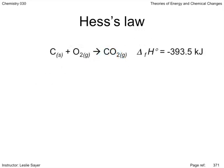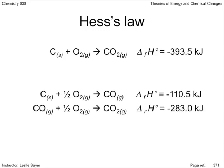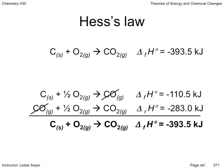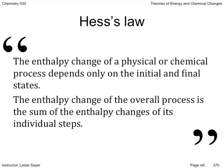So, whether you're using one process or a number of processes, the net change in enthalpy is dependent on the overall process rather than the number of processes. This is the essence of Hess's law, and is stated as follows. The enthalpy change of a physical or chemical process depends only on the initial and final states. The enthalpy change of the overall process is the sum of the enthalpy changes of its individual steps.